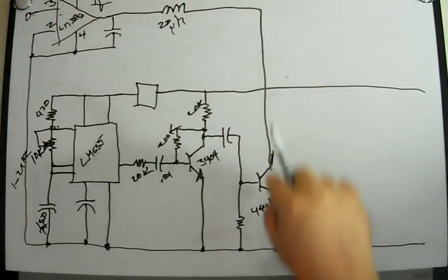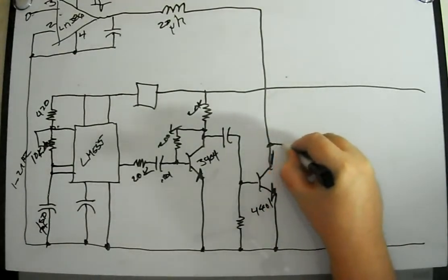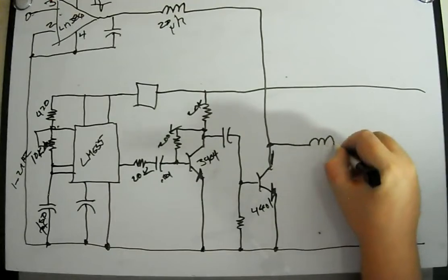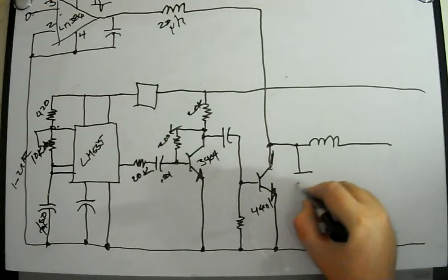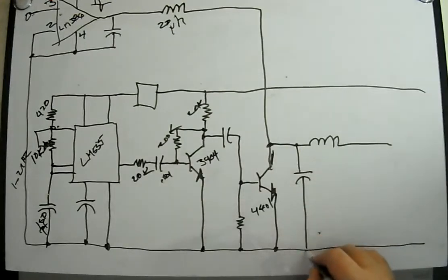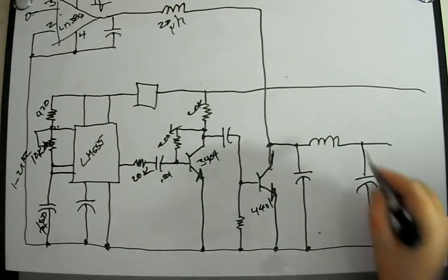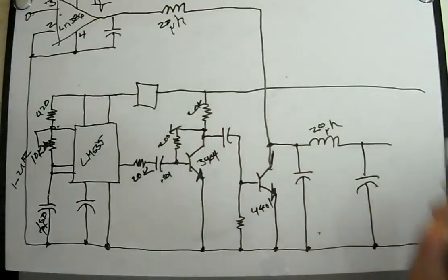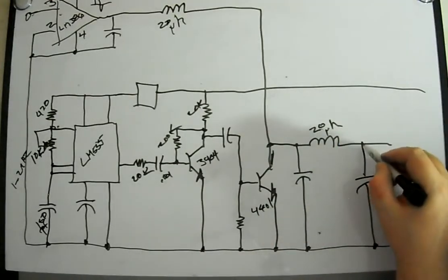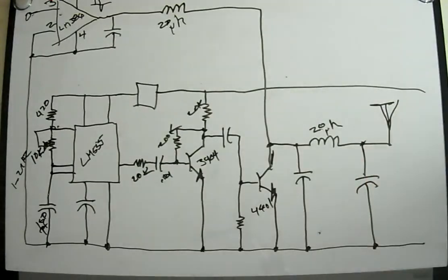Our 386 amplifier is at the same time biasing this output stage, and this output stage we just couple through another inductor, it can be just like that one. We put a capacitor here and we put a capacitor here, and these two capacitors and this inductor form what's called a pi filter. The pi filter helps shape the output of our amplifier, of our transmitter circuit.